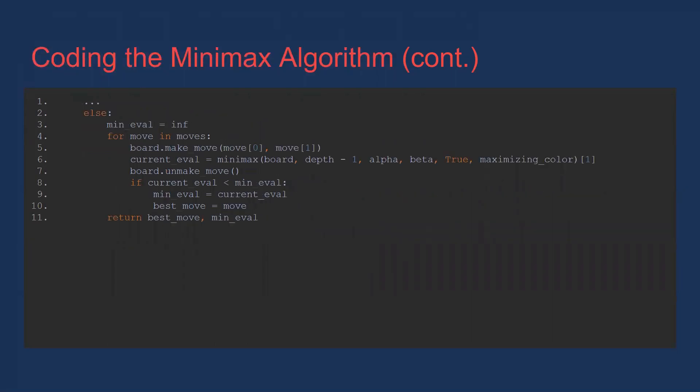This code segment is basically identical to the one before, but we find the minimum instead of the maximum. So once again, we go through each move, see what the game state looks like after the move has been made, but this time we check if the value is lower than any of the ones that we've seen before. If it is lower, then we update the min eval and best move variables accordingly. And similar to before, we return the minimum evaluation along with the best move.